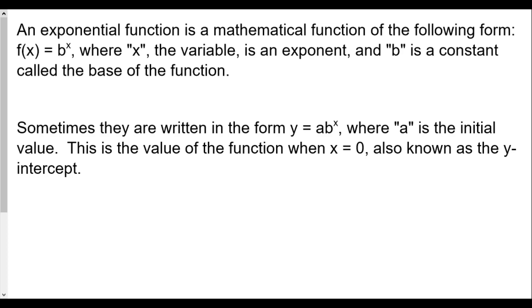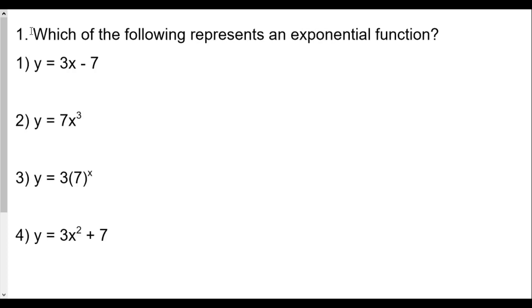Let's take a look at the choices for question number one. Which of the following represents an exponential function? We see y = 3x minus 7 — this is a linear function, so probably not this one, because we don't have a constant base raised to a variable power. Number two is y = 7 times x to the third power. We have an exponent, but the exponent is not the variable — the base is a variable. This is not an exponential function.